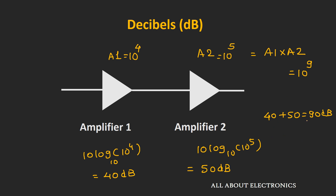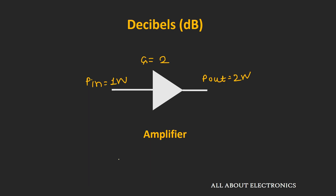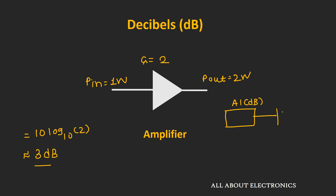If your system has a gain of 2, then in decibels it is 10 log(2), which is approximately 3 dB. So if one amplifier provides a gain of A1 dB and you add another amplifier that multiplies the gain by 2, the overall gain becomes A1 + 3 dB. In any system, whenever the input is multiplied by a factor of 2, the gain added to the system is 3 dB.